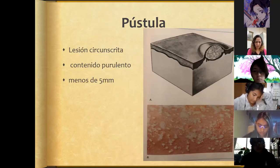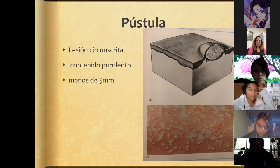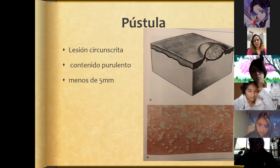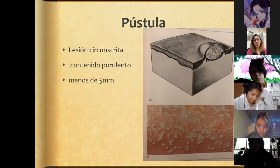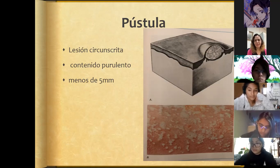A pustule is a circumscribed lesion with purulent content measuring less than 5 millimeters. We can also note whether it is associated with the hair follicle or whether it is a pustule appearing on glabrous skin — meaning skin without hair.